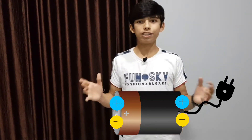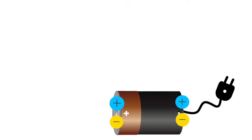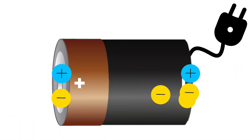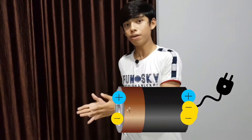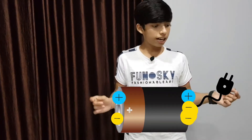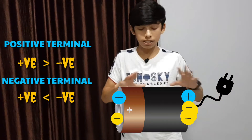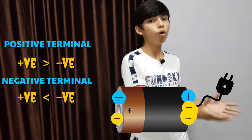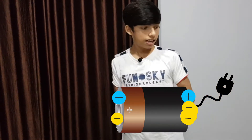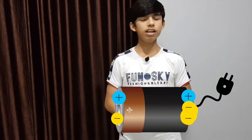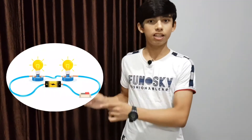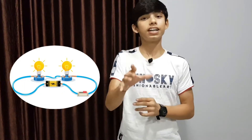Now let's put this battery on charging. What is actually happening is that we are transferring some electrons from the positive terminal to the negative terminal, so we have a charge imbalance. Here we have more electrons and here we have more protons. By the way, the battery does this using chemical energy.